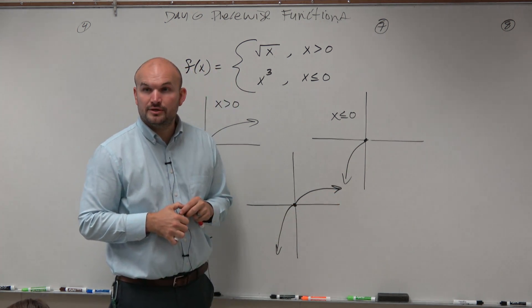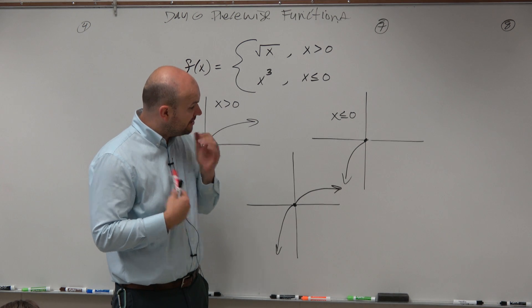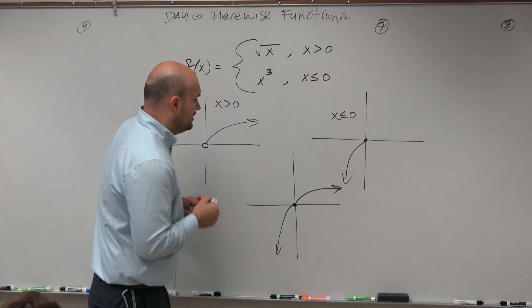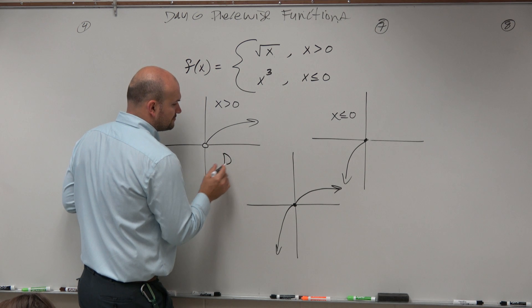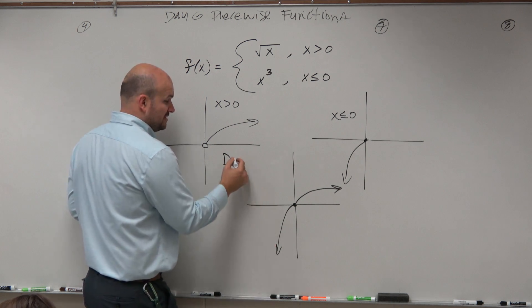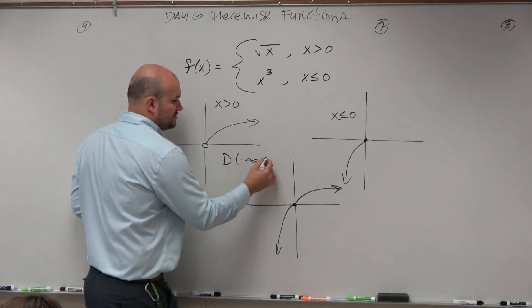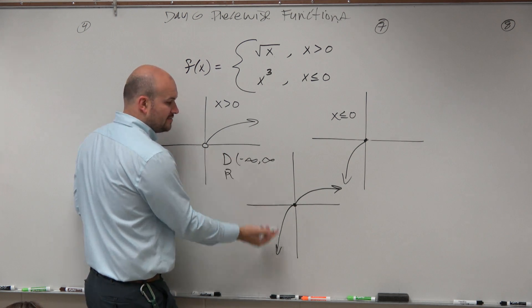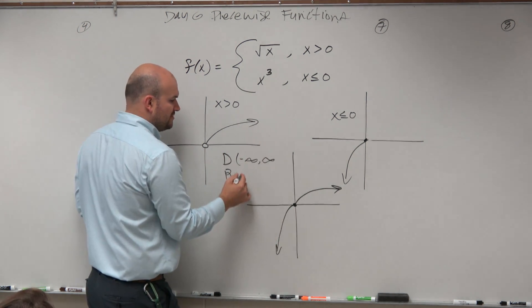OK. And that would be your graph. We could also look at the domain and range here. If you guys look at the domain here, you could say the domain is basically going to be all real numbers again, negative infinity to infinity. And the range is going to be from negative infinity to infinity.